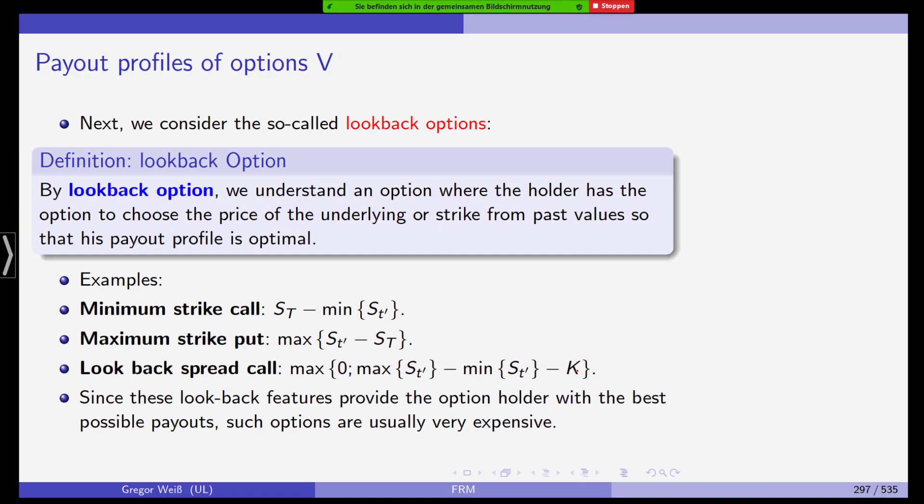Next, we have so-called lookback options. A lookback option is an option where the holder has the option to choose the price of the underlying or strike from past values. So that is, the payout profile is optimum. For example, a minimum strike call that is the underlying price at maturity, ST minus the minimum of the underlying price in between or the maximum strike put or the lookback spread call. All of these have a strike that is chosen from past stock prices. That's why it's called a lookback option. They seem to be quite profitable. They can be, but as a matter of fact, what I mentioned just before, these options will also be much more expensive to buy in the first place.